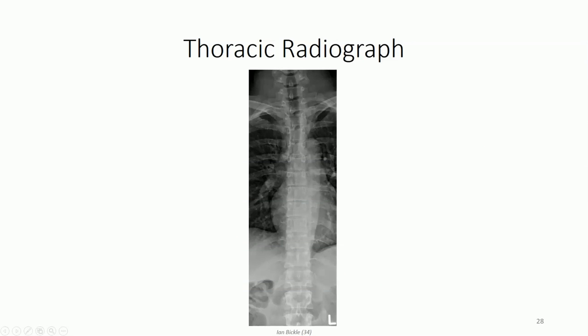Here we see a radiographic view of the thoracic vertebrae, outlining the 9th thoracic vertebrae. As with the cervical vertebrae, the pedicles are readily apparent, as is the spinous process. Note the head and tubercle of each rib and how they articulate with the bodies and transverse processes of each vertebrae, respectively. Also note that the head region actually articulates with two separate and adjacent vertebrae in each of these examples.